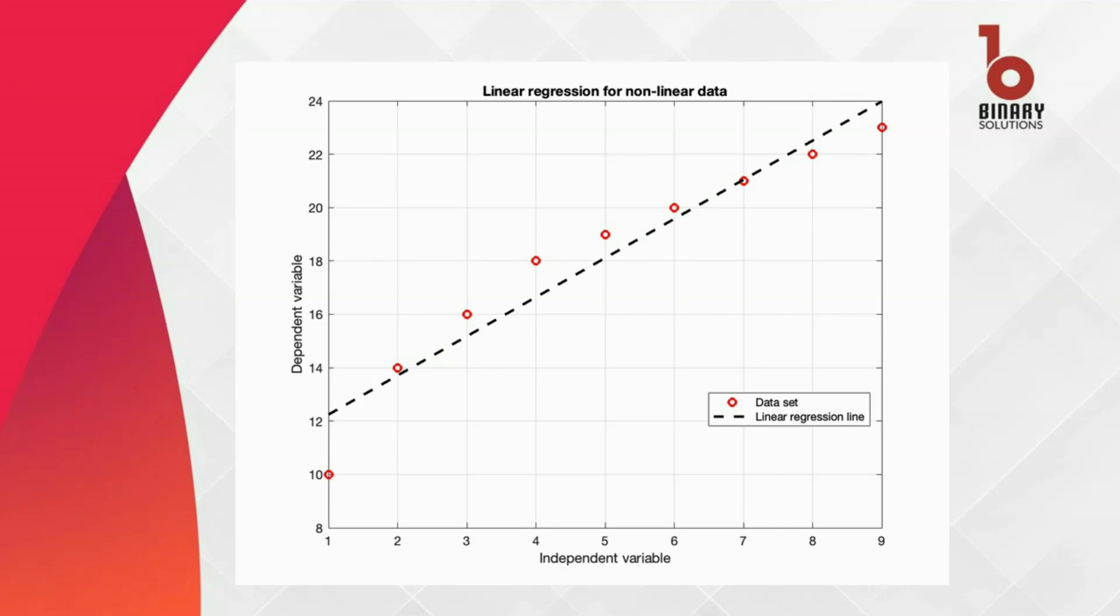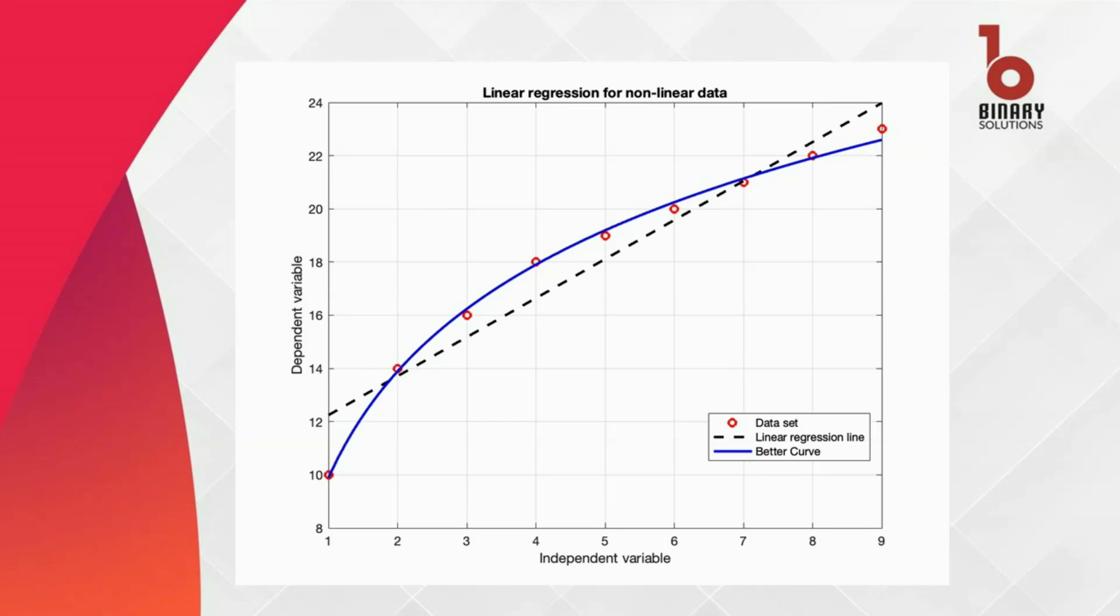Therefore, we want to find a mathematical model for this data such that the regression curve passes through maximum number of data points. The blue curve shows that the data set is being modeled much more accurately as compared to linear regression line. It can be noticed that the new curve passes through all the data points.